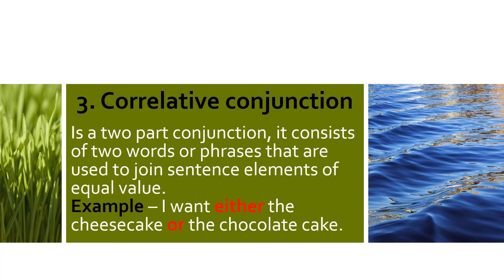The third and last type is correlative conjunction. A correlative conjunction is a two-part conjunction — it consists of two words or phrases used to join sentence elements of equal value. An example of correlative conjunction: 'I want either the cheesecake or the chocolate cake.'